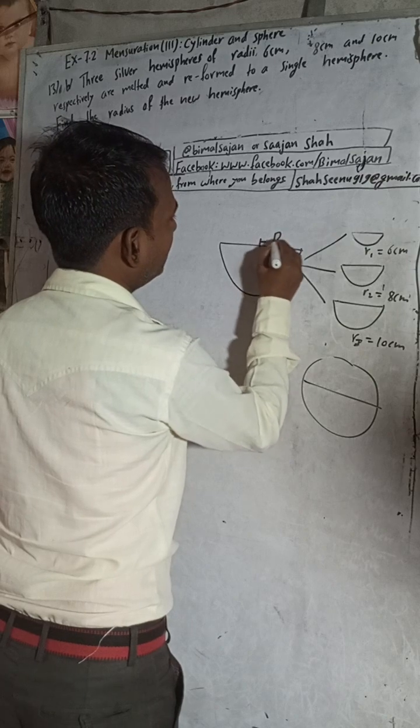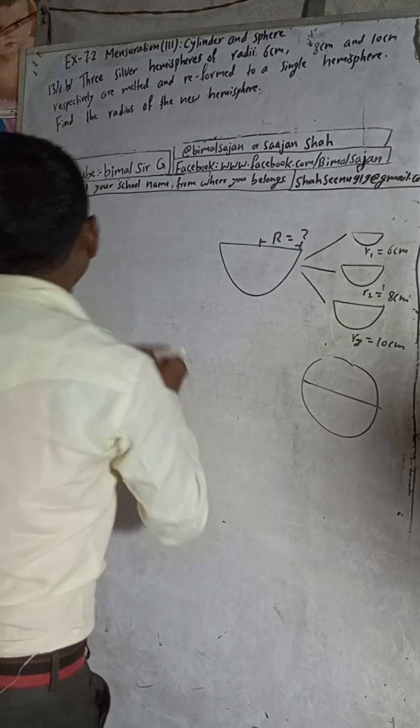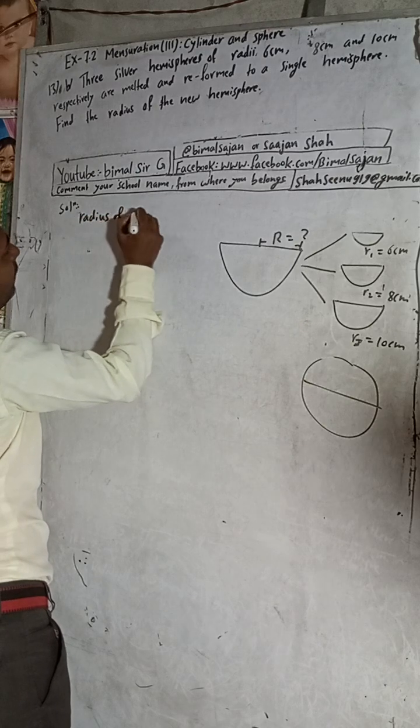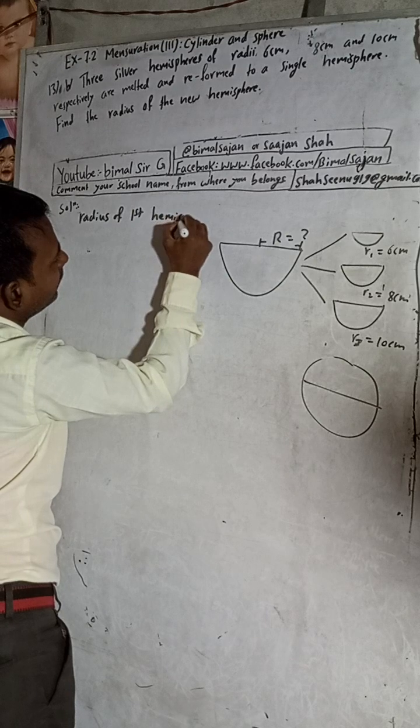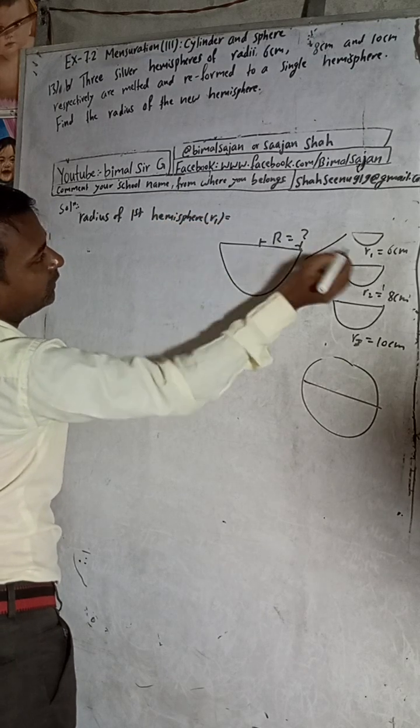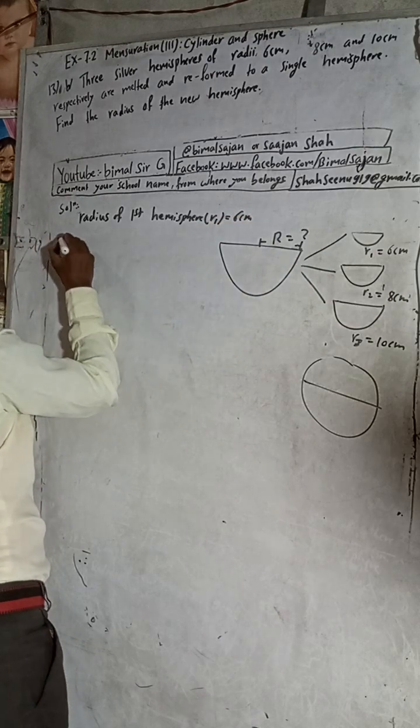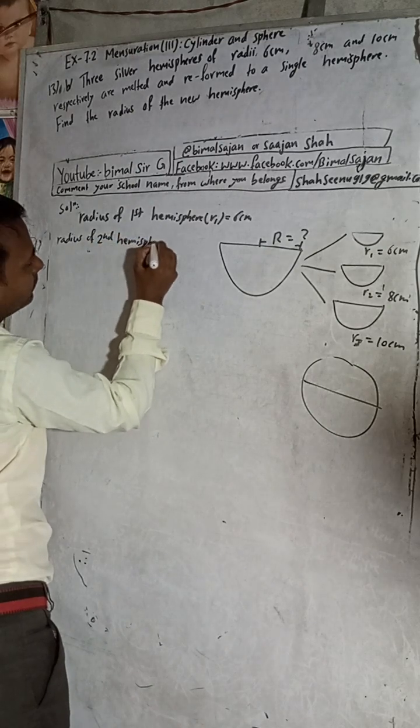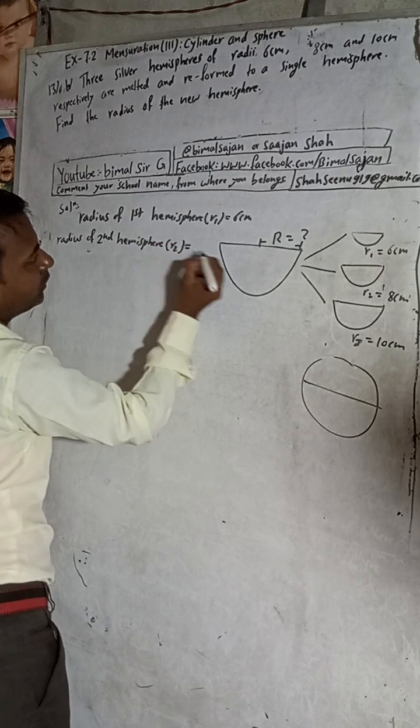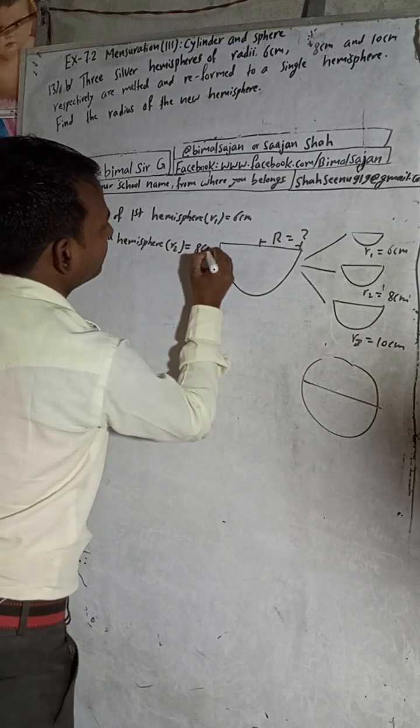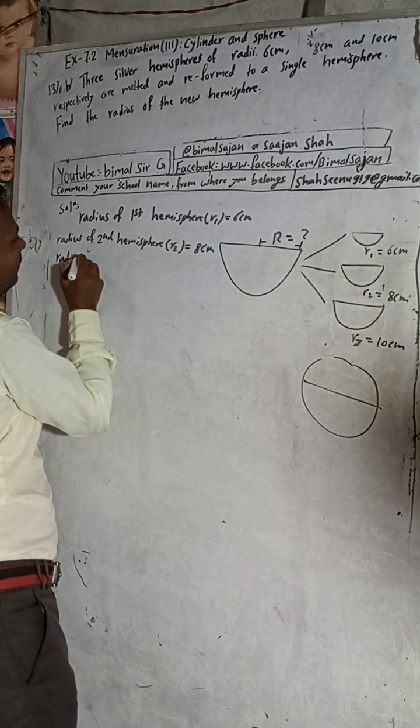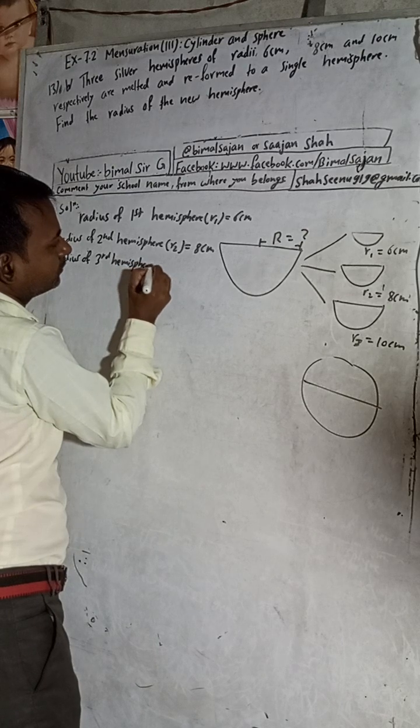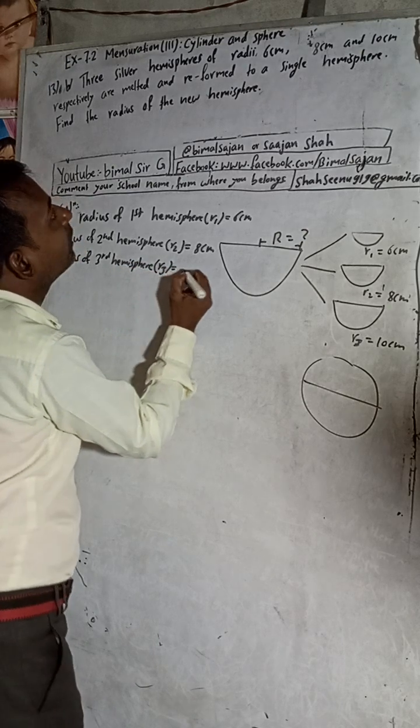Now here, radius of first hemisphere R1 is equal to 6 cm, radius of second hemisphere R2 is equal to 8 cm, radius of third hemisphere R3 is equal to 10 cm.